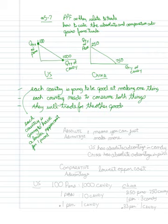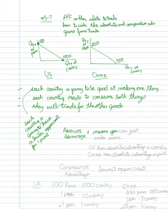Let's deal first with a rather simple concept that has nothing to do with trade, but the reason economists talk about it is because some of you may already think this way. Absolute advantage means that you can just make more — it just means that you're bigger. In this case, the U.S. has an absolute advantage in candy because the U.S. can make 1,000 units of candy while China can only make 750 units of candy. What's important to remember is that absolute advantage doesn't tell us what the U.S. produces — it just means that it could produce more.